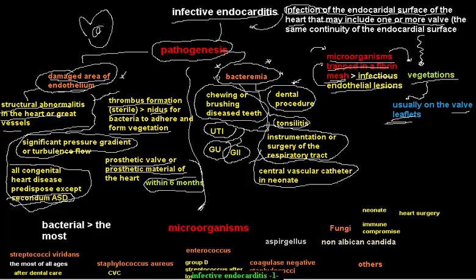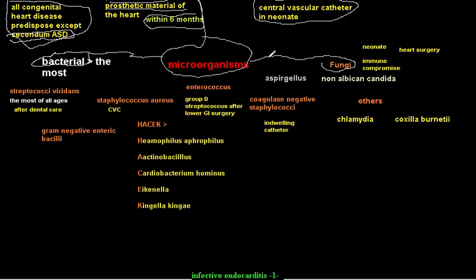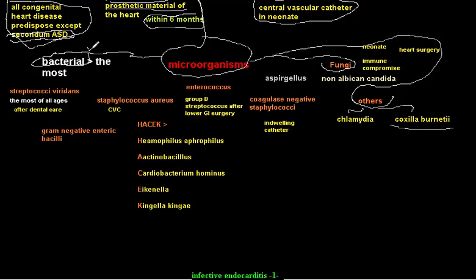Moving to the microorganisms that may cause endocarditis: the most common are bacterial. Fungal endocarditis and other causes such as Chlamydia and Coxiella burnetti also exist. The most common bacterium causing endocarditis is Streptococcus viridans — the most common cause across all ages — and the most common predisposing factor for it is dental care.